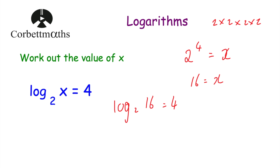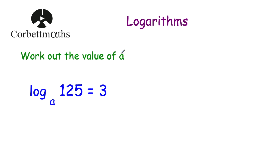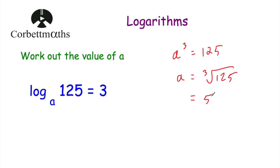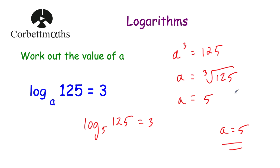Question 4: work out the value of a. We have log to base a of 125 is equal to 3. So a cubed equals 125. What number cubed gives 125? That's 5, because 5 cubed is 125, or equivalently the cube root of 125 is 5. So a equals 5. Log to base 5 of 125 equals 3.